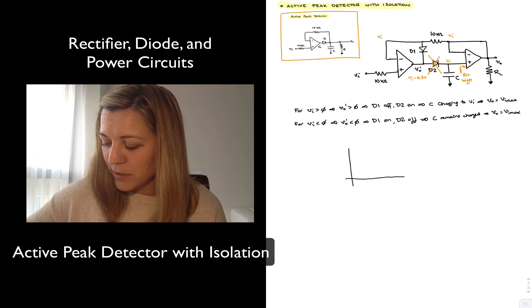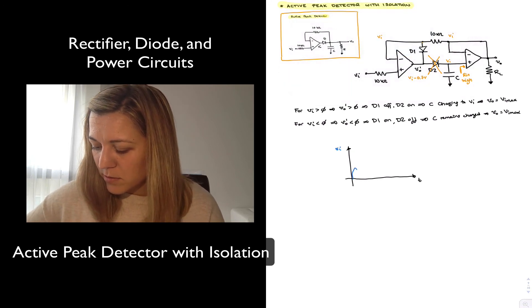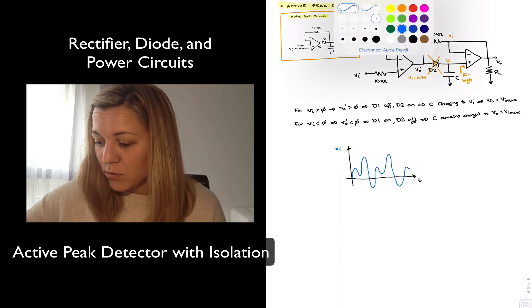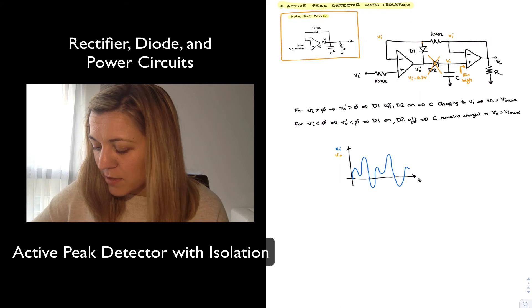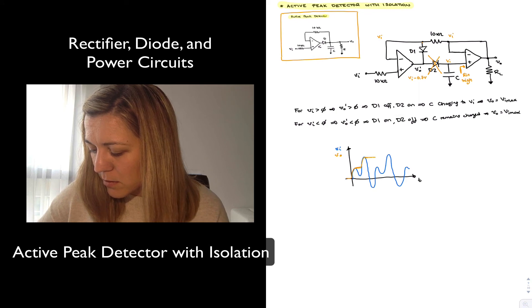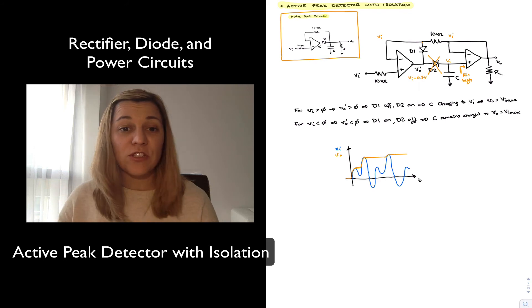And so what we are expecting to get if let's say this is my input signal with respect to time. For example, what I will expect to get for my output is something that is much more able of holding that peak value for my input signal. Now some discharge again but not as much as the previous case.